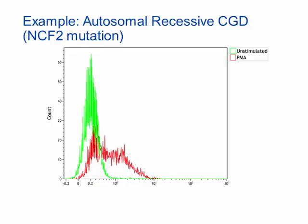This is another patient with autosomal recessive CGD with a mutation in the NCF2 gene encoding the P67-phox protein. As seen in the previous slide with the NCF1 gene mutation, the pattern is similar, with diminished neutrophil respiratory burst and reduced DHR fluorescence on the x-axis for the stimulated sample marked by the red histogram.